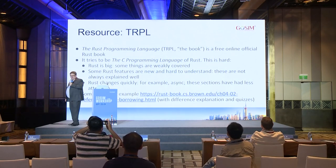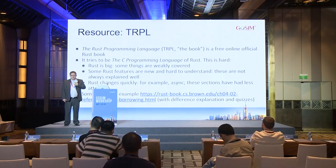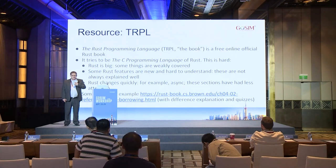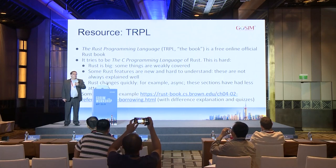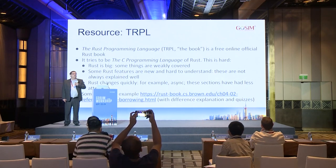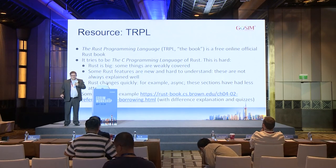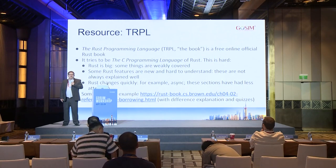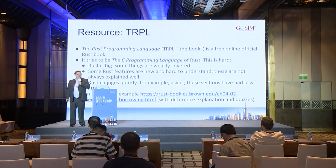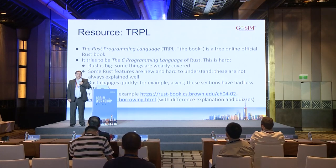There's The Rust Programming Language — the book on the web. It's a free online official Rust book by the Rust Project, and it tries to be the K&R of Rust, which is a big ask. It does a good job in some ways. Some things are maybe less well covered than they could be. Async in particular is very difficult to explain to a new Rust programmer, and the book sometimes struggles with that. And as Rust changes, it takes time for the book to catch up. Having said all that, it's an amazing book, and I highly recommend it as the strongest starting point.